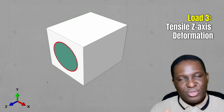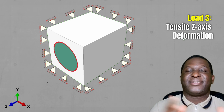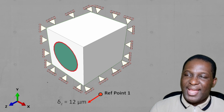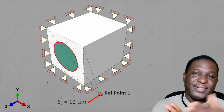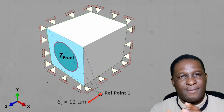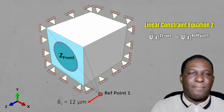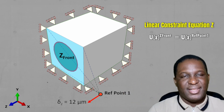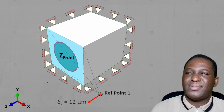For the z-axis, a similar approach is used. Normal uniaxial-style boundary conditions are applied, then a 12 micron unit load — about 10% of the length — is applied at reference point 1 in that axis. A linear constraint between reference point 1 and the front face ensures the load is translated directly to the z-front. That's how you apply uniaxial deformation within an Abaqus model.